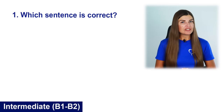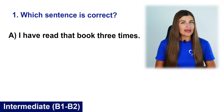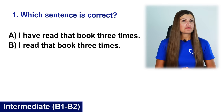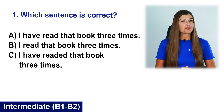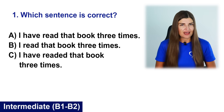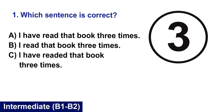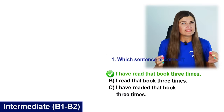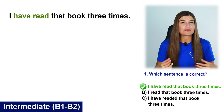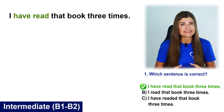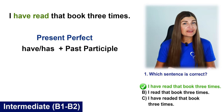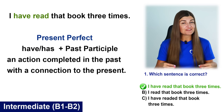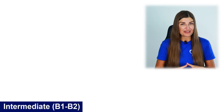Now we are going to get to the intermediate level. Let's start! Question 1: Which sentence is correct? A. I have read that book 3 times. B. I read that book 3 times. C. I have read that book 3 times. The correct sentence is A: I have read that book 3 times. Have read is the present perfect form of the verb to read, indicating an action completed in the past with a connection to the present.